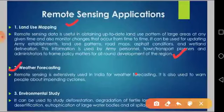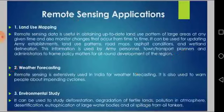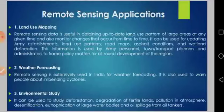Remote sensing is extensively used for weather forecasting in India and to warn people about impending cyclones. It is also used for environmental study — including deforestation, degradation of fertile lands, atmospheric pollution, desertification, eutrophication of large water bodies, and oil spillage from tankers.